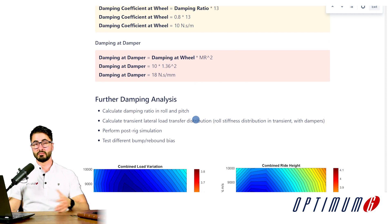A few other analysis that could be done after this in terms of damping would be to calculate damping ratio also in roll and pitch for you to understand where you are and compare different adjustments. You could calculate the transient lateral load transfer distribution or the roll stiffness distribution in transient with the damper. So when you're cornering, now the dampers are also influencing your load transfer. The dampers are influencing the car balance. So you can run that metric as well.